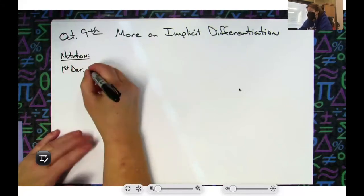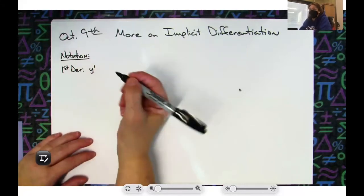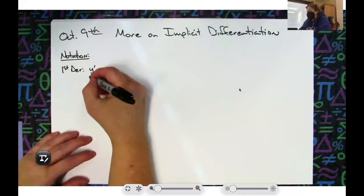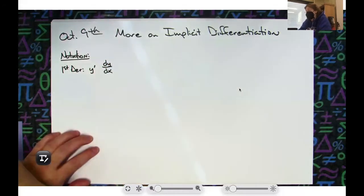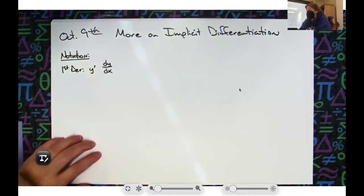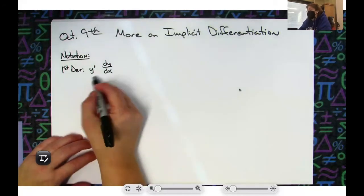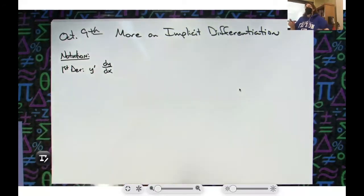But you can also do dy over dx - that's the derivative of y with respect to x, which is what y prime is. So those two can be used interchangeably. And if you remember what I told you yesterday when I introduced this implicit differentiation, I told you we were going to be using y primes.